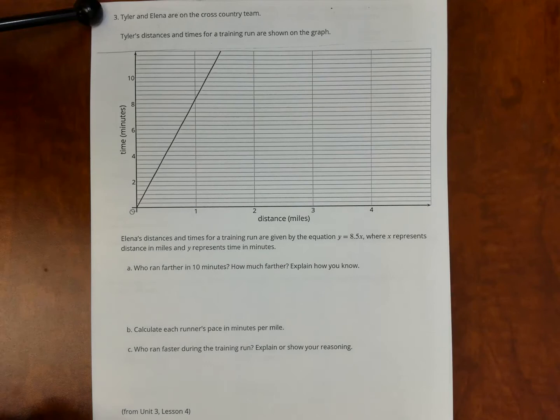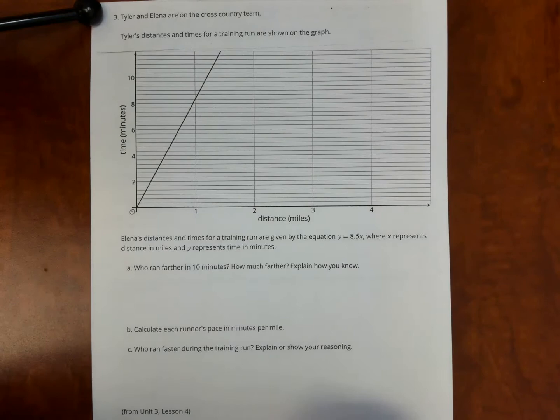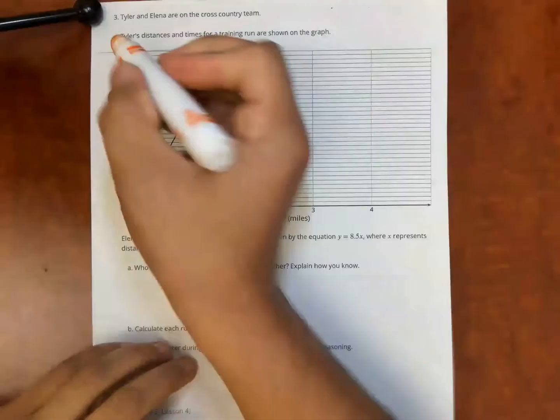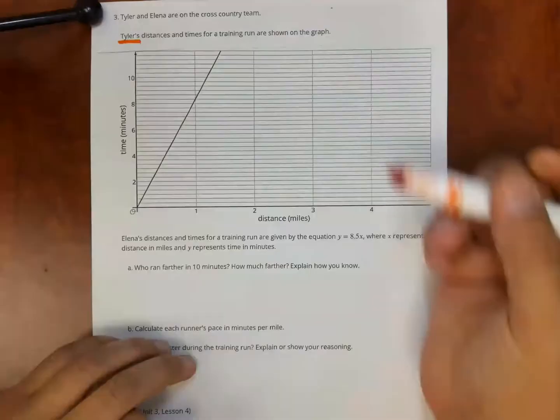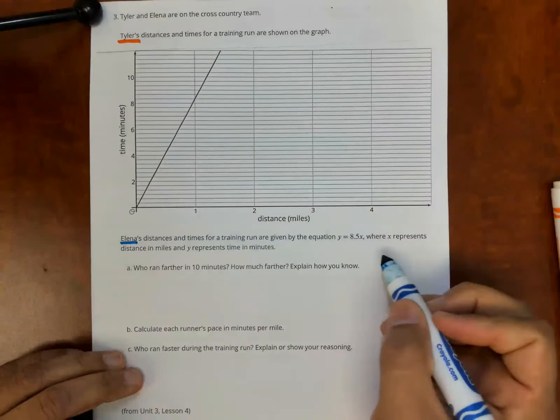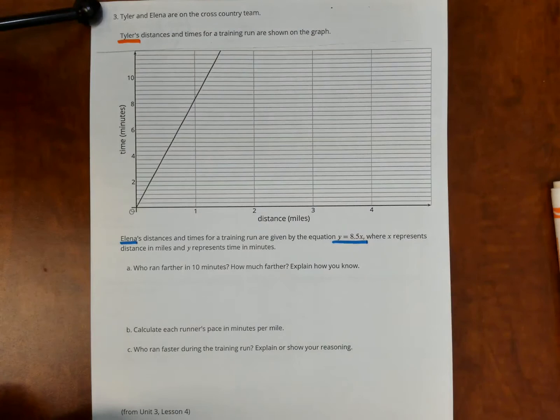All right, so in this problem, what we're doing is we have two different rates that we're comparing. Tyler's, I'm going to be doing his work in orange and Elena's in blue. Here you see the equation for Elena's y equals 8.5x. And then the question, who ran farther? How much farther? Explain how you know.